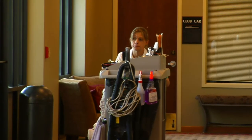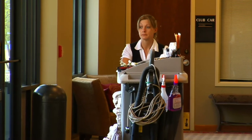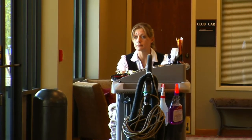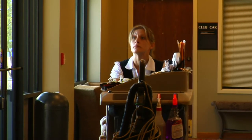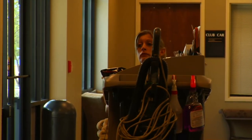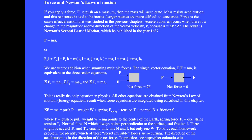If you apply a force to push on a mass, then the mass will accelerate. Mass resists acceleration, and this resistance is said to be inertia. Larger masses are more difficult to accelerate. Force is the cause of acceleration that was studied in the previous chapters. Acceleration occurs when there is a change in the magnitude and/or direction of the velocity vector, because the acceleration vector is the time rate of change of the velocity vector. The result is Newton's second law of motion, which he published in the year 1687.